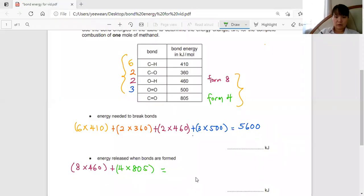As for the bonds formed, eight of 460 and four times 805. I'm going to get 6900.